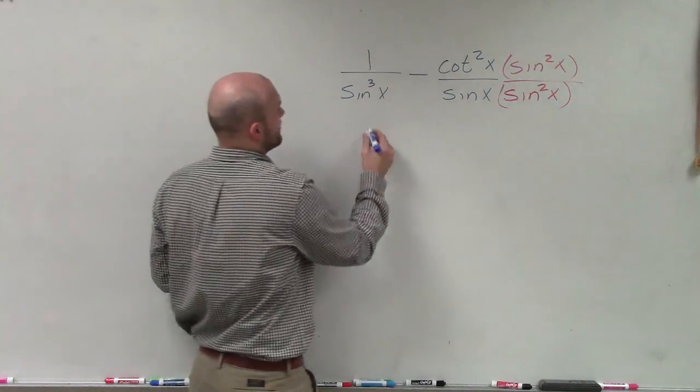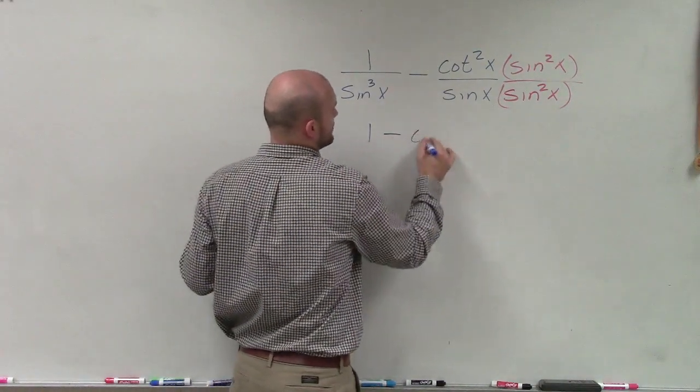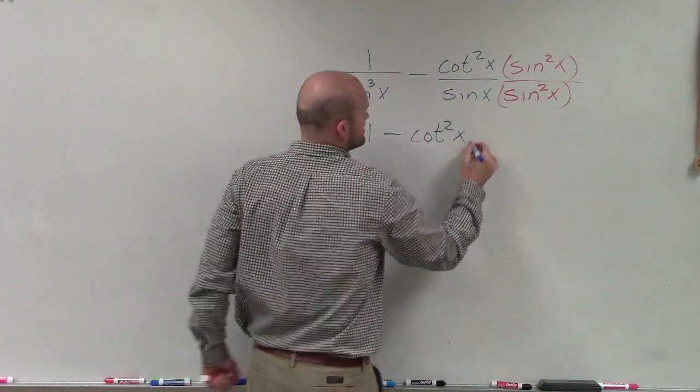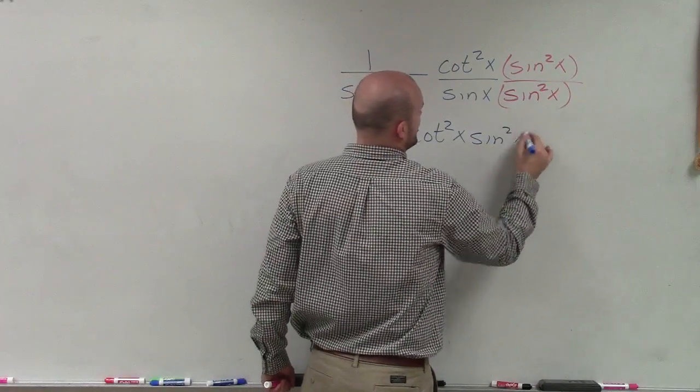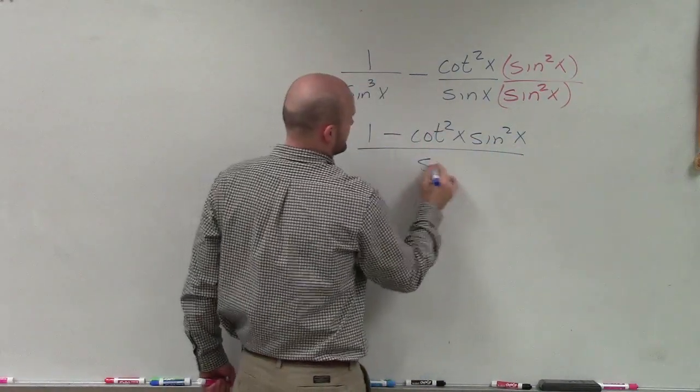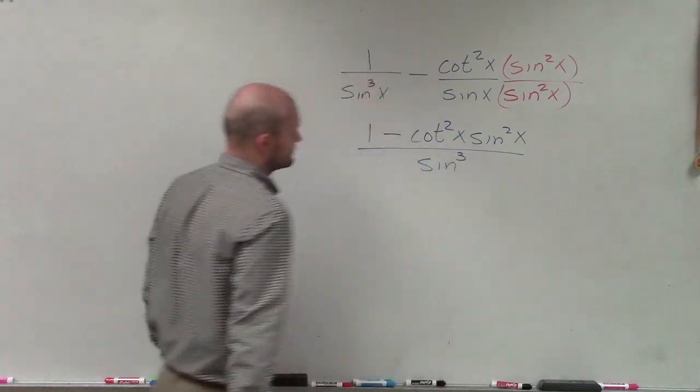So now I go ahead and do that and I have 1 minus cotangent squared of x times sine squared of x, all divided by sine cubed of x.